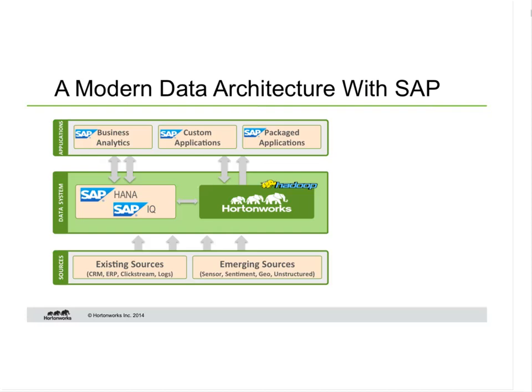What does it look like to plug SAP into the modern data architecture? SAP has a very broad suite of tools and technologies helping organizations get success with their data — everything from HANA to Sybase IQ to a range of analytic and reporting tools. These all plug into the Hortonworks Data Platform. We've been working closely with SAP on engineering these technologies to ensure seamless interoperability. I'll now turn it over to David to take you through SAP's technologies and how they interface with Hadoop.